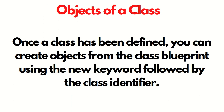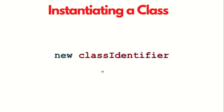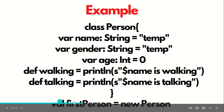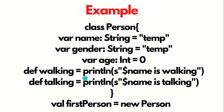What are the objects of a class? Once the class has been defined, we can create an object from the class blueprint using the new keyword followed by the class identifier — new space class identifier. The syntax we're gonna use is: val space object name. For example, object name is firstPerson equal to new Person. This is how we can create an object from a class.